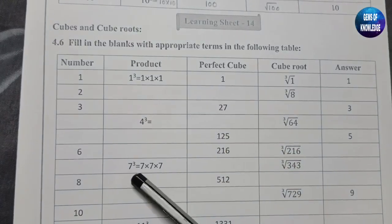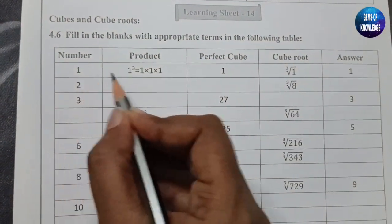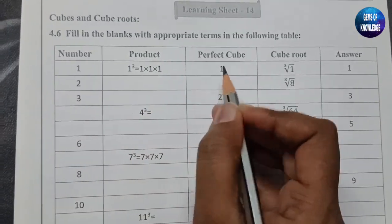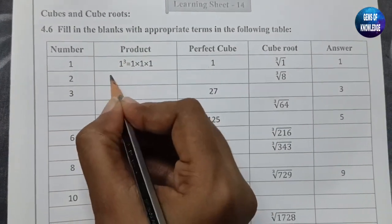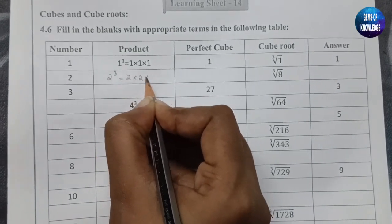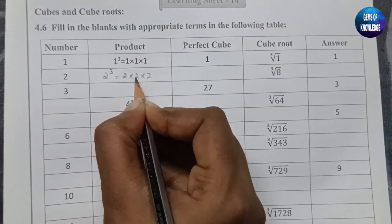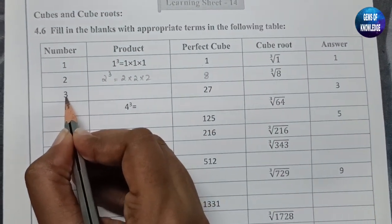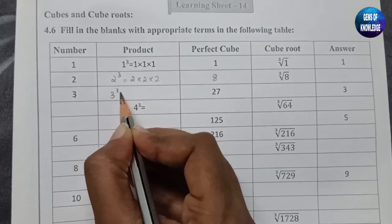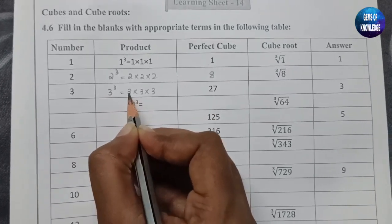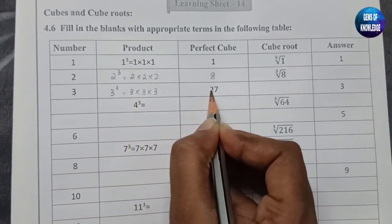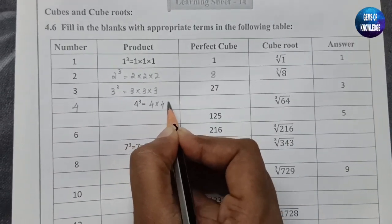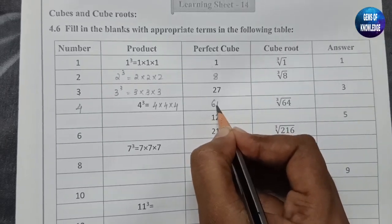The same type of exercise but in the form of cubes. One cube equals one into one into one, which is 1. Similarly, two cube is two into two into two — two twos are four and four twos are eight. Three cube equals three into three into three — three threes are nine, and nine threes are 27. Four cube is four into four into four, which equals 64.